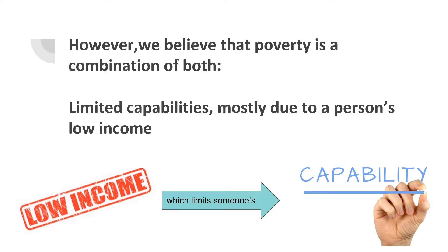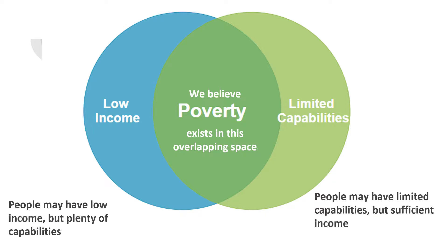We've decided to define poverty as a person's limited capabilities mostly due to that person's low income. This can be depicted from a Venn diagram where on one side you have low income and on the other side you have limited capabilities. We believe poverty is what exists in this overlapping space, specifically low income as a result of limited capabilities.